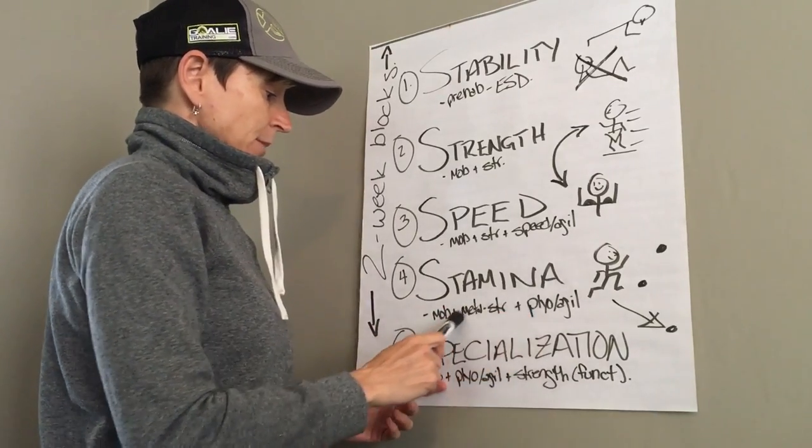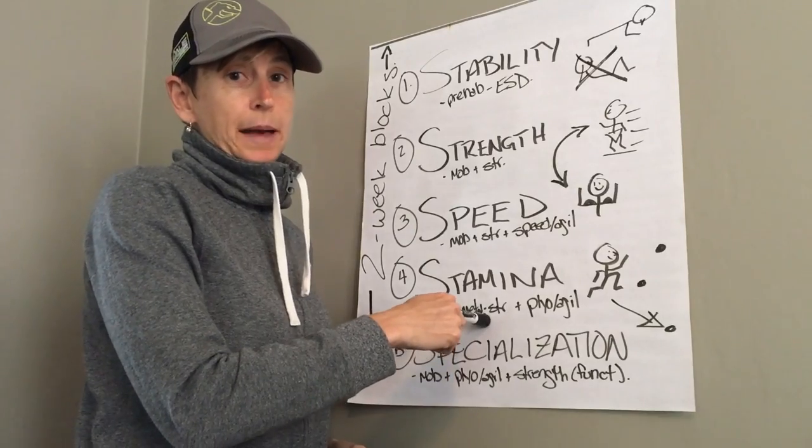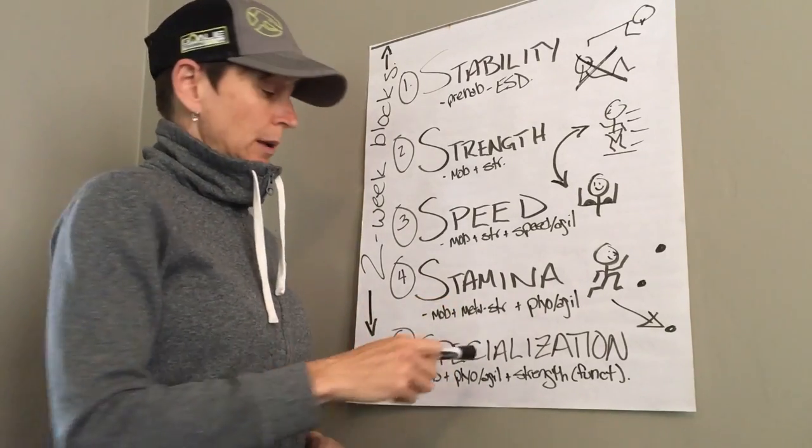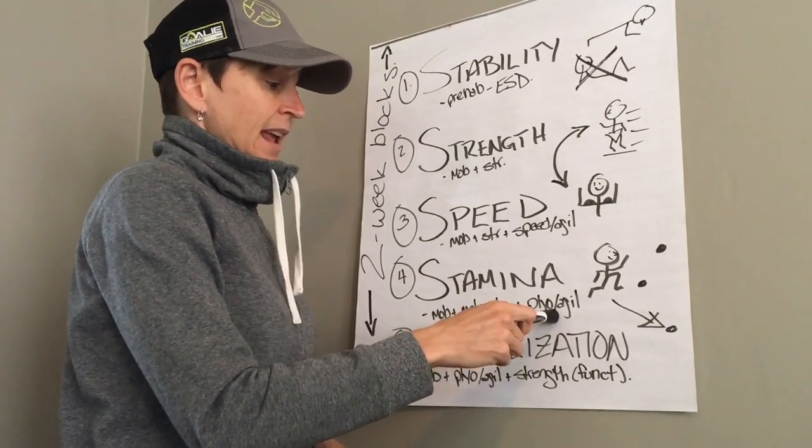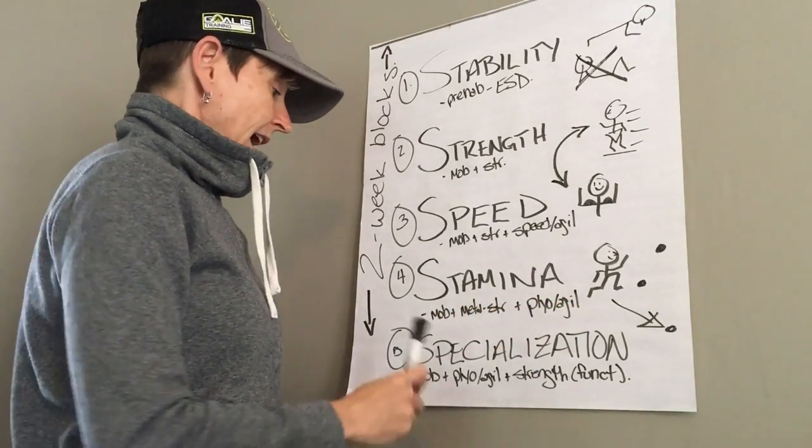Then stamina comes in. We're still working mobility, we change our strength to a little bit of metabolic strength training which will also improve your cardiovascular system, and then we continue with some plyometrics and agility training.